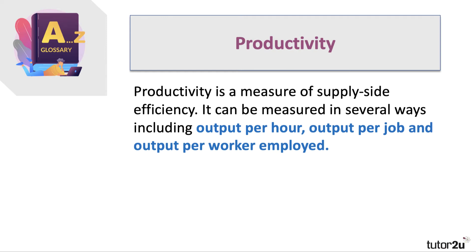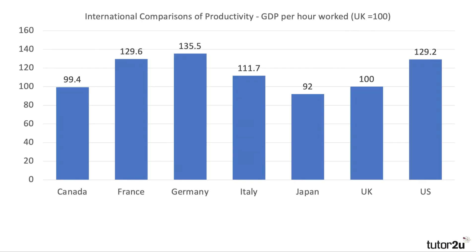Productivity is another macroeconomic objective — it's a measure of supply-side efficiency. You can measure productivity in various ways: output per person employed, output per hour worked, output per job. One interesting issue is the extent to which UK productivity relative to other countries is low. This chart from 2016 — the latest data available — shows that if UK productivity is given an index number of 100, countries such as Germany, France, and the United States are well ahead. We are slightly better than Japan and Canada, but 11 points behind Italy. Closing that productivity gap is important.